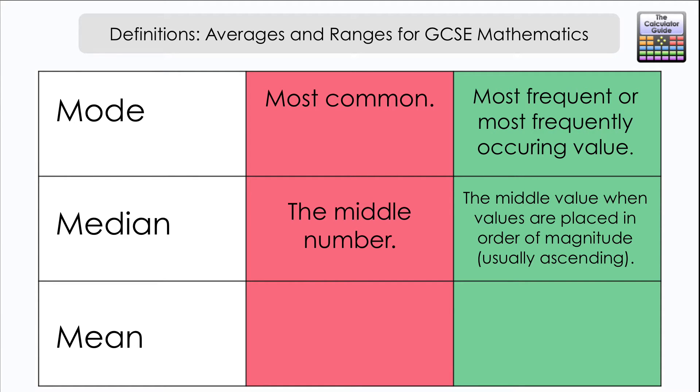I'm going to say the middle value, because we're dealing with a data set of values, when the values are placed in order of magnitude. That's just a fancy way of saying place them in order.